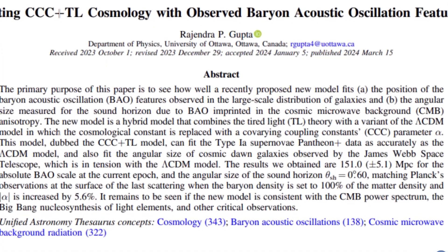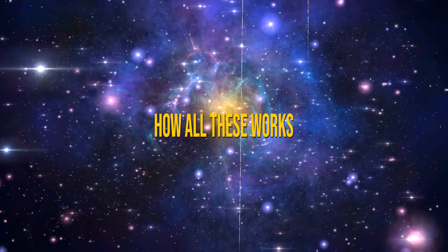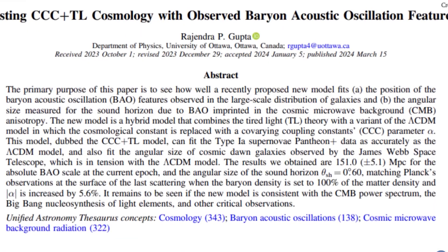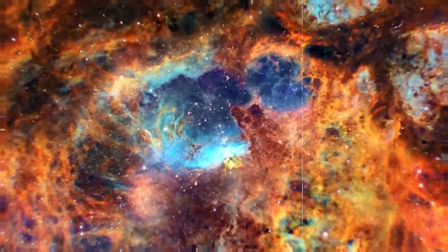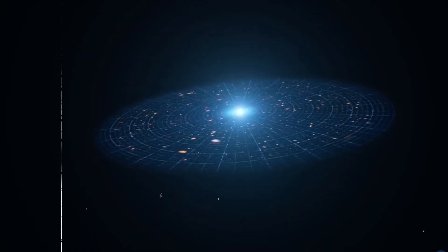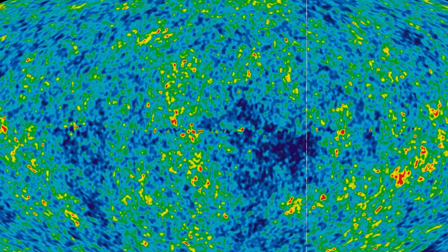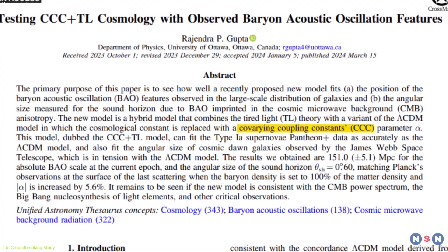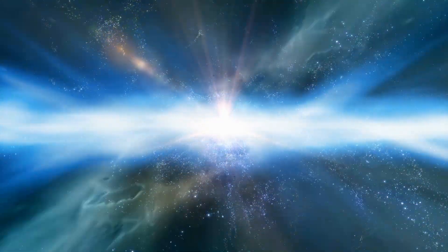Using innovative theories like triple C and tired light, Gupta presents a bold new model that reimagines how all these works. The triple C theory suggests that the basic forces in the universe, like gravity and electromagnetism, get weaker over time. On the other hand, tired light theory says that light loses energy as it travels through space, which looks a lot like the red shift we usually link to the universe expanding. Combining these ideas into what's called the triple C plus tired light model, it fits well with many important observations in astronomy.